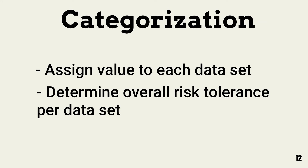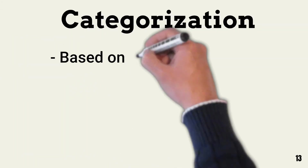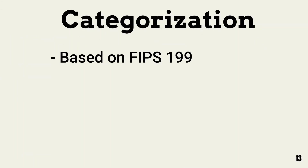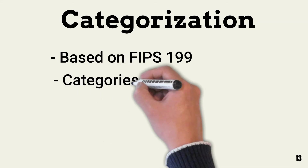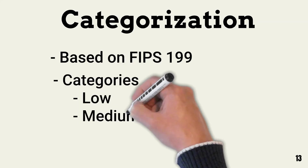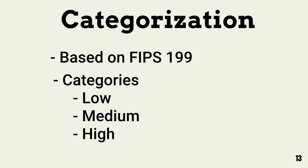The two primary objectives of categorization are assigning a value to each asset and determining the overall risk tolerance management has for each data set and associated systems. According to the Federal Information Processing Standard, FIPS 199, there are three qualitative categories: low, medium, and high.